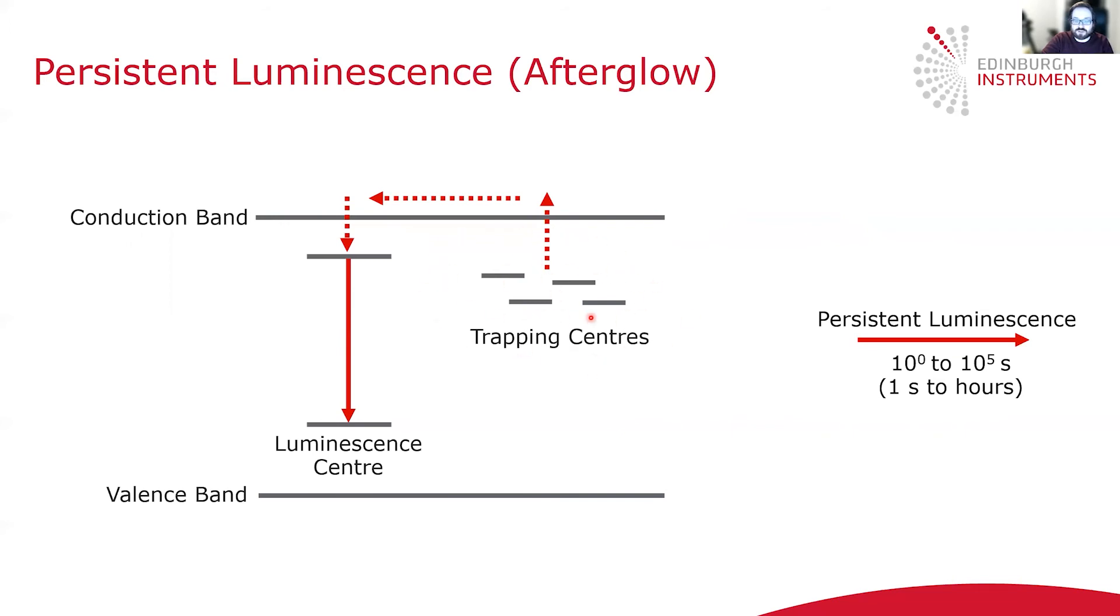These could be trapping centers located below the conduction band or above the valence band. Electrons in these trapping centers are released, usually in some form of thermally activated process. They then migrate towards luminescence centers where they can radiatively recombine, resulting in the emission of light, which is persistent luminescence.